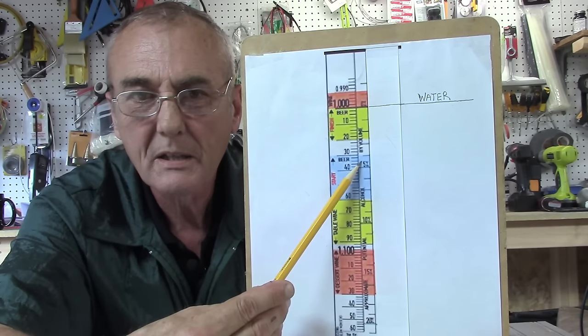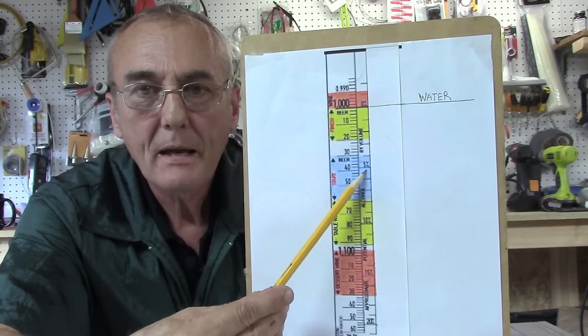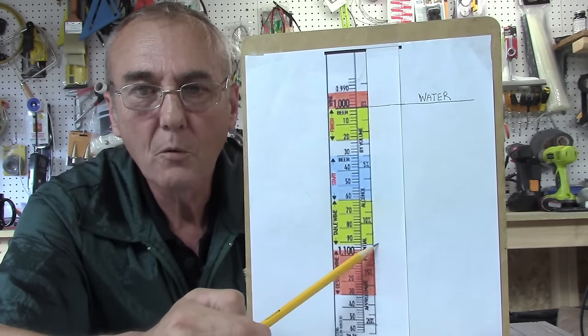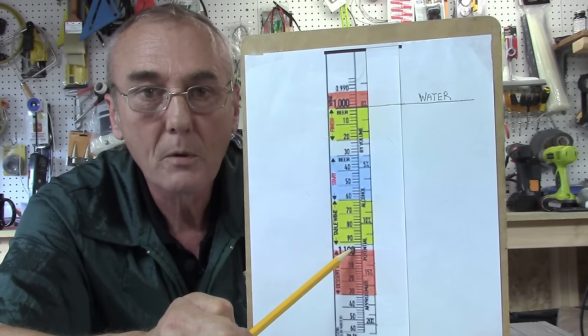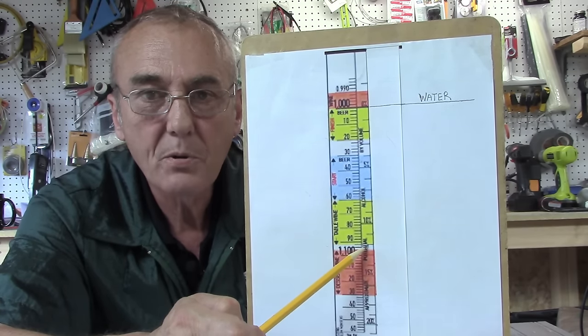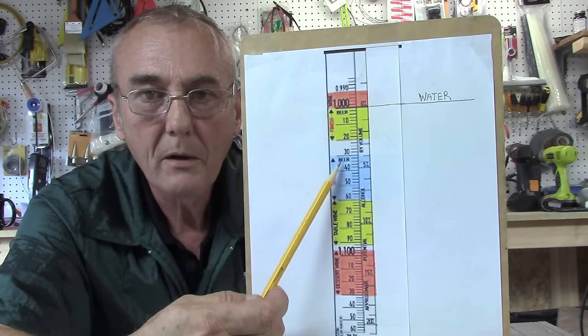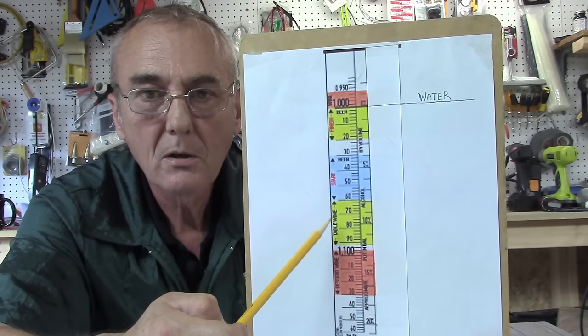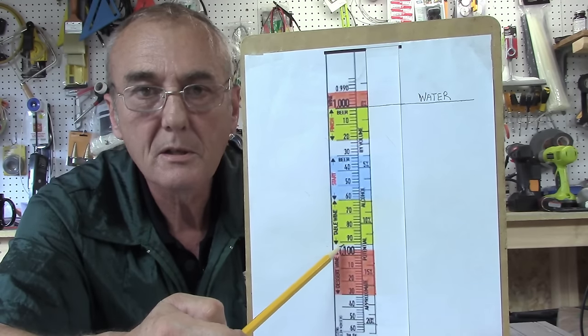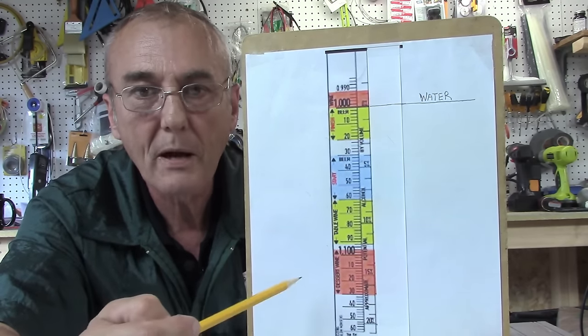What we shoot for is if I shoot for 1.090, I know I can get 12 percent. That means I get one pound, two pounds, three pounds - and this is a ballpark figure - three pounds of sugar in one gallon of water would be about 12 percent.